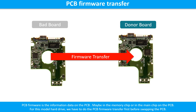PCB board firmware is the information data on the PCB board. It may be in the memory chip or in the main chip on the PCB board. For this model hard drive, we have to do the PCB board firmware transfer first, then we swap the PCB board. Otherwise, the new board will not work on the original hard drive.